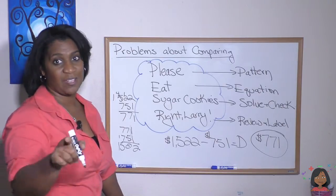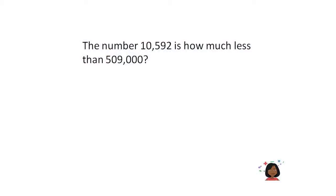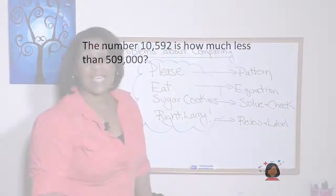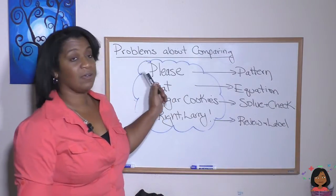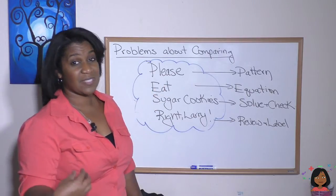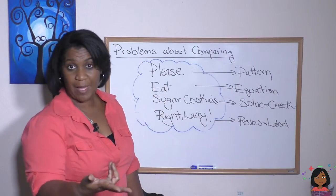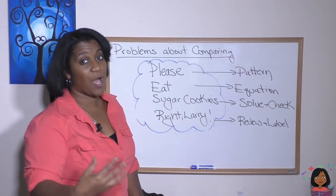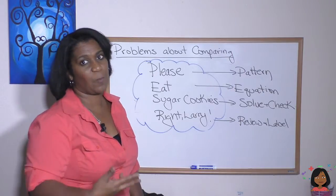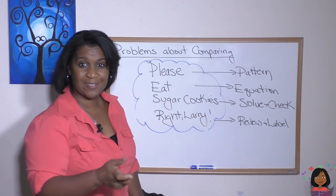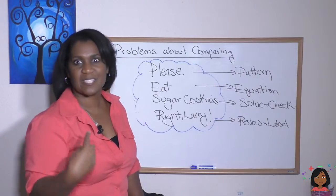Let's try another problem. The number 10,592 is how much less than 509,000? Sounds like we might have another. If P is for pattern, this sounds like another subtraction pattern because they're asking us how much less is one number than the other. And that's looking for a difference. So our pattern is a subtraction pattern.